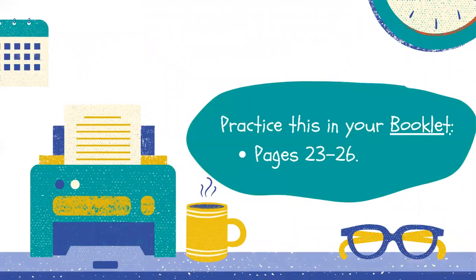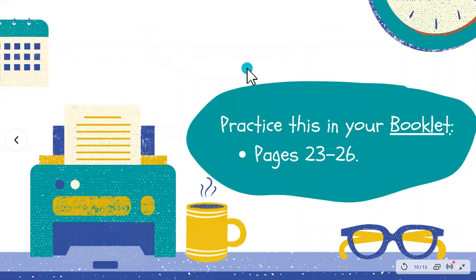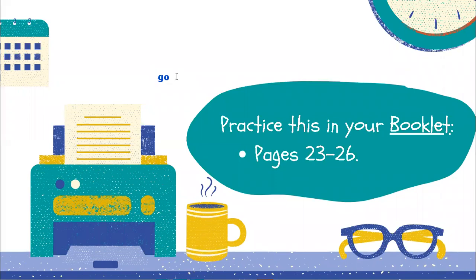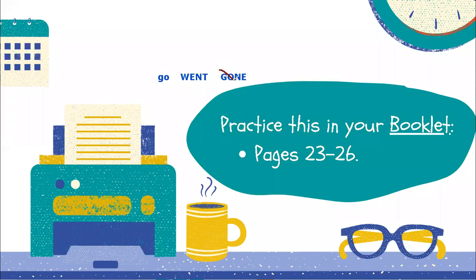You can practice a little bit more on your booklet, on pages 23 to 26. There you have some more examples. And remember to follow the list of irregular verbs — siempre es la segunda columna. En la primera se muestra el verbo en su forma base o infinitiva, por ejemplo 'go'. En la segunda columna siempre está el pasado. Y luego hay una tercera columna que es el participio, pero eso no lo vamos a ver. Solamente tienen que enfocarse en la segunda columna.